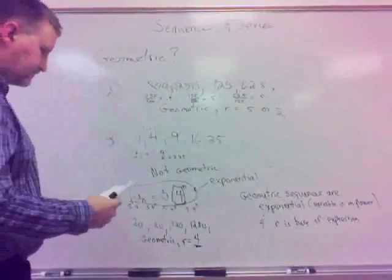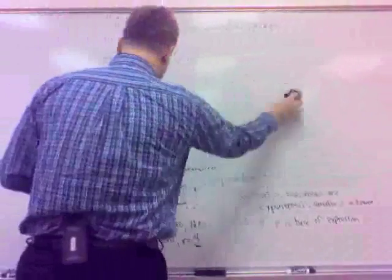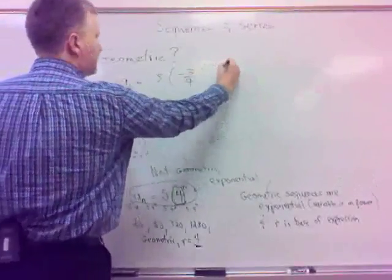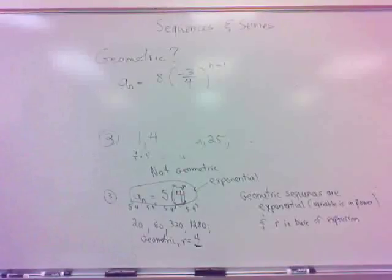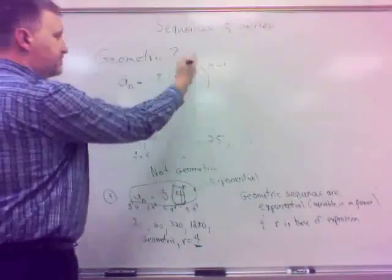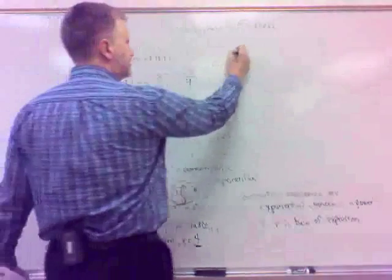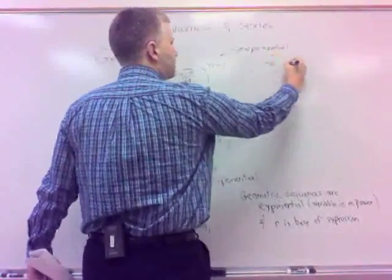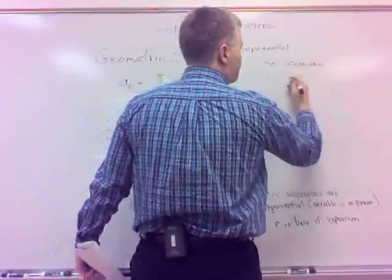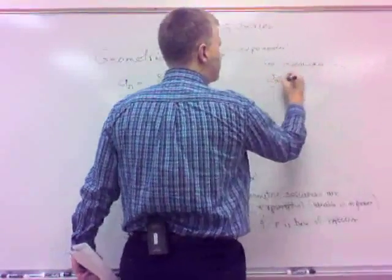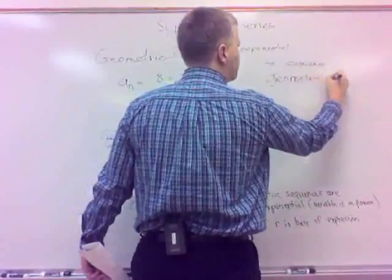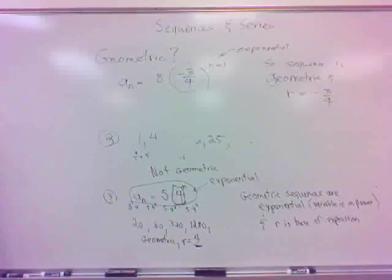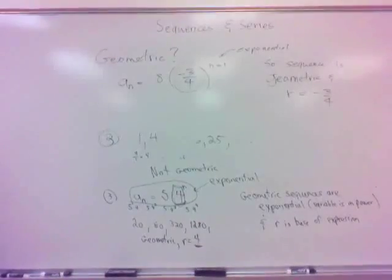For example, if I have a sub n equals 8 times parentheses negative 3 fourths to the n plus 1. Now, this has a plus 1 in the power there, but that's still exponential. That is an exponential expression because the variable is in the exponent. So that's exponential. This means this is geometric. If we wrote out the terms, we'd see a geometric sequence. And the r, what's the r? Negative 3 fourths. The base is a fraction, and it's negative. So whatever that base is, that's going to be your ratio.